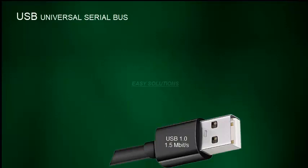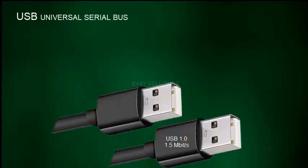The first USB version was released in 1996, starting with USB 1.0, with later versions released throughout the years. USB 1.0 had a transfer speed of 1.5 megabits per second. Then two years later in 1998, USB 1.1 was released, and this had a transfer speed of 12 megabits per second.